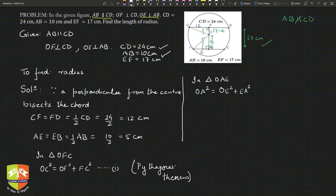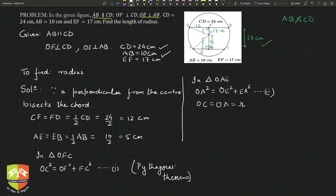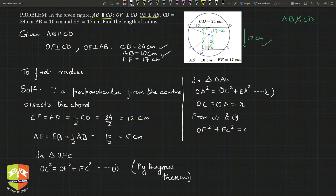Since OC equals OA equals r (both are radii), we can equate equations (1) and (2). From (1) and (2): OF² + FC² = OE² + EA². Substituting: OF is 17 minus x, so (17 − x)² + 12² = x² + 5².